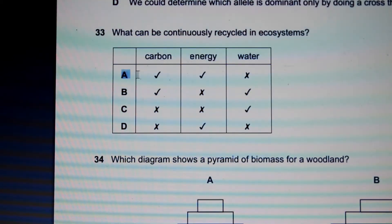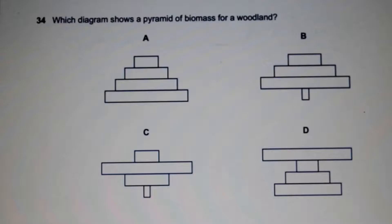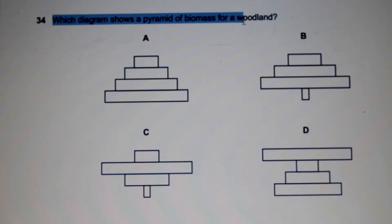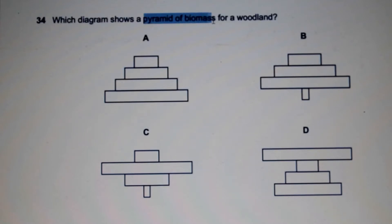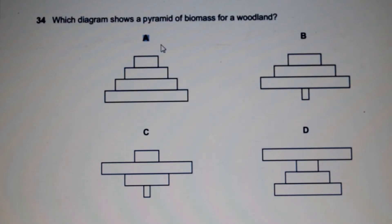Question 34: Which diagram shows a pyramid of biomass for a woodland? Pyramids of biomass are always in a pyramid shape, so the only diagram with this pyramid shape is our answer. The answer is A.